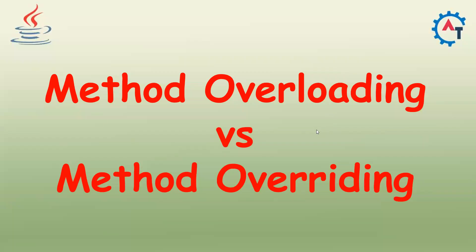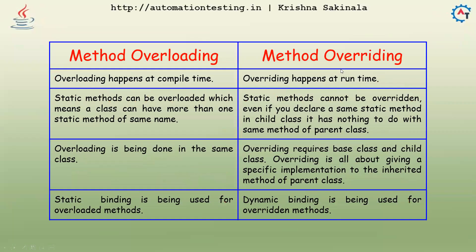In this video we'll talk about the difference between method overloading and method overriding. Overloading happens at compile time, so because of that it is called compile time polymorphism. Overriding happens at runtime, so because of that it is called runtime polymorphism.